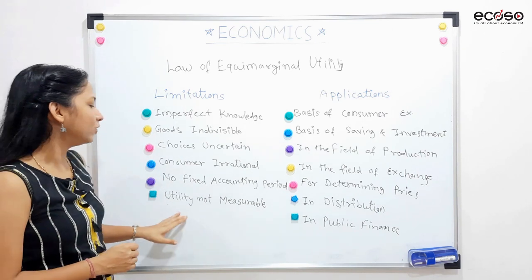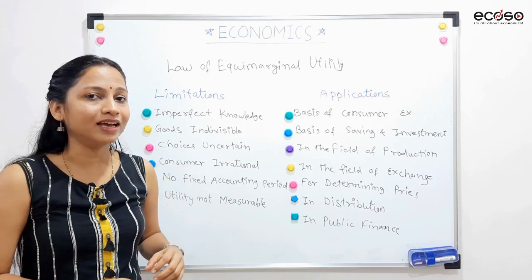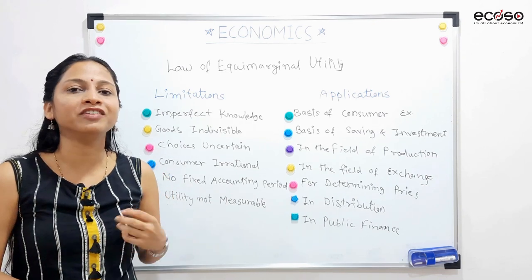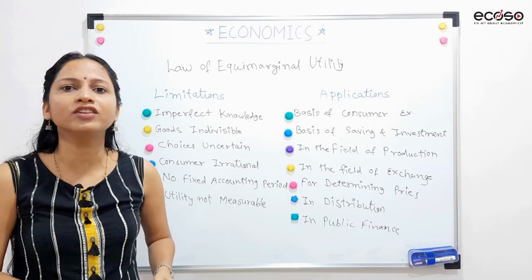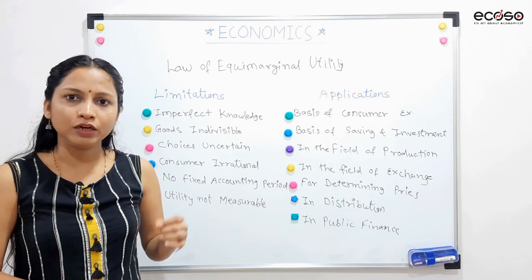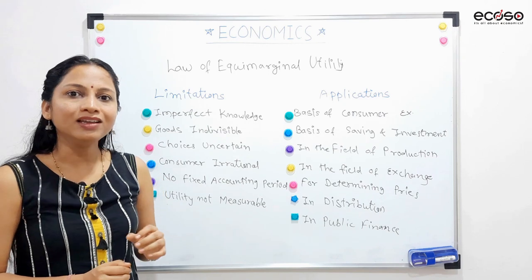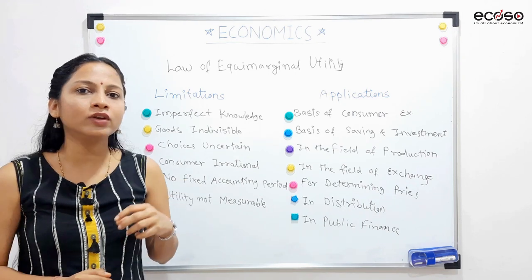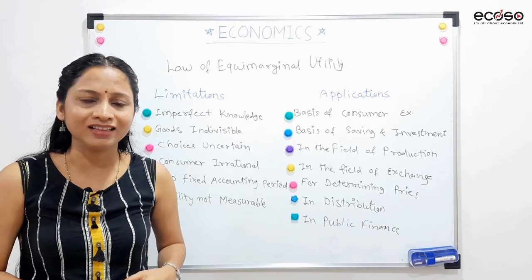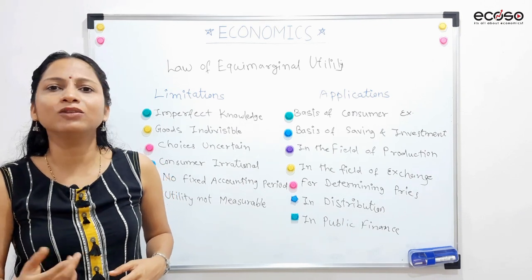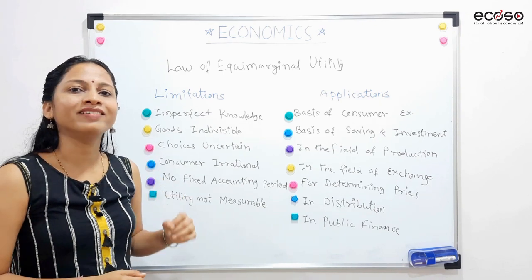Next is utilities not measurable. We have assumed that utility is measurable, but in reality utility is not measurable — we can't measure exactly how much utility a commodity gives. Also, the intensity of a particular commodity can change: if there is a lot of rain, the utility of an umbrella will be more; in the cold period, its utility will be zero. It means we can't measure utility exactly.